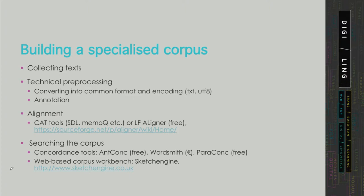If your corpus is multilingual and parallel, you will need to perform alignment. Alignment is best performed either using CAT tools, but most of them are commercial, like SDL or MemoQ. Alternatively, you can use the LF Aligner, which is free but slightly more complicated to use.